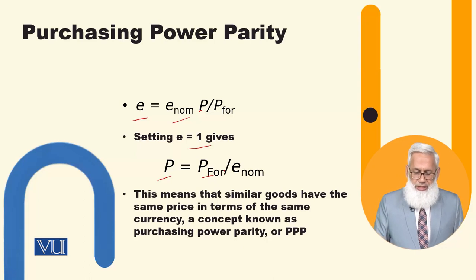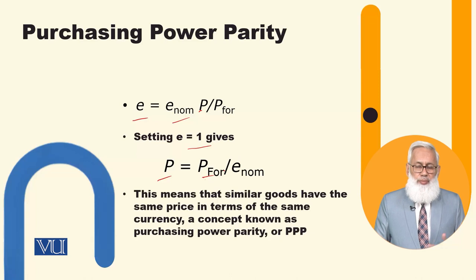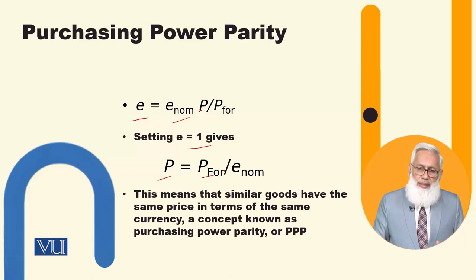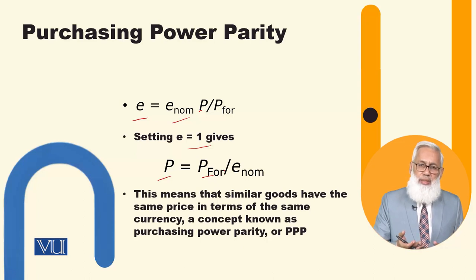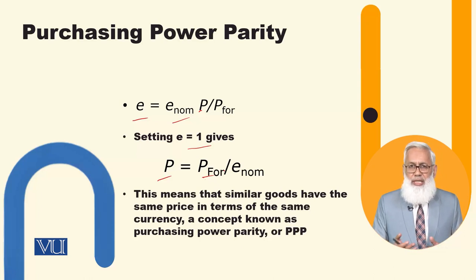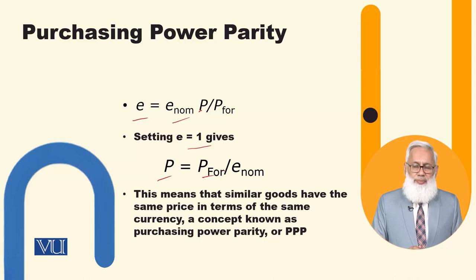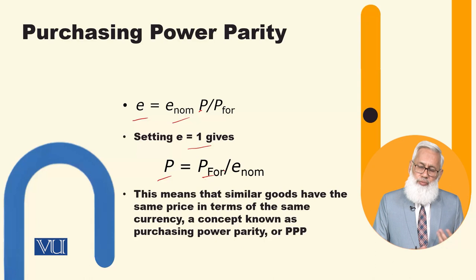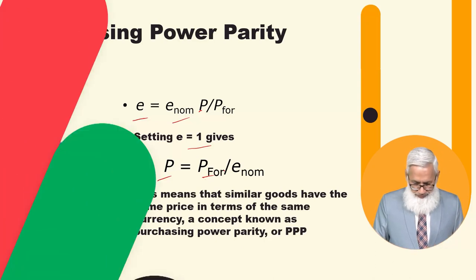A concept known as the purchasing power parity. Taking the example of the burger — if we look at the price of the burger in Pakistani currency, then it should be one in Pakistan and America. If this purchasing power parity holds, or if we buy in dollar terms, then it should be one in Pakistan and America, if this holds.